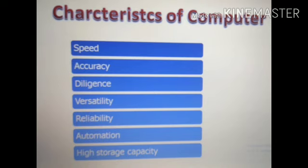Next, diligence: computer can do so many tasks or calculations with same consistency and accuracy. It does not feel bored or lack concentration. Next, versatility: it is capable to perform different kinds of works with same accuracy and frequency.